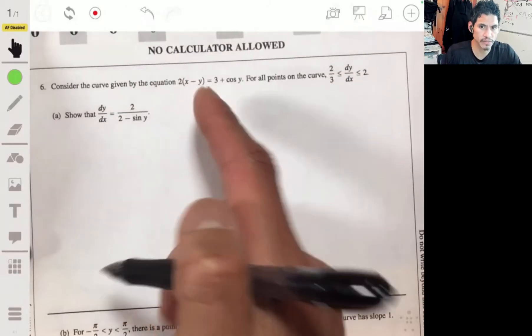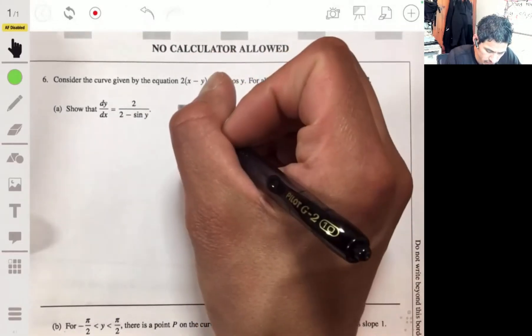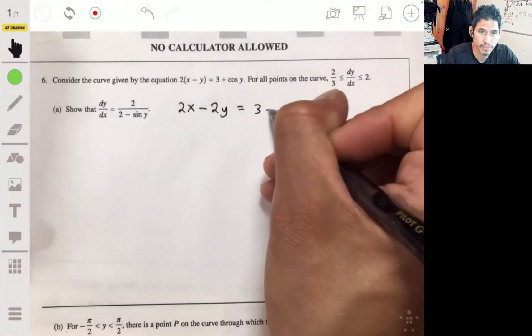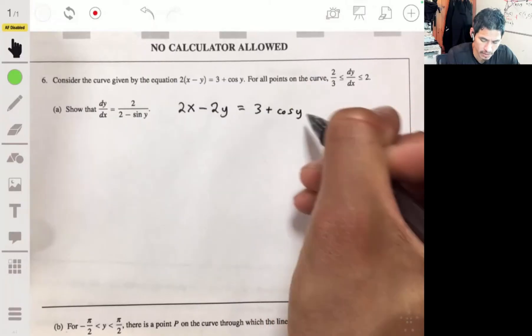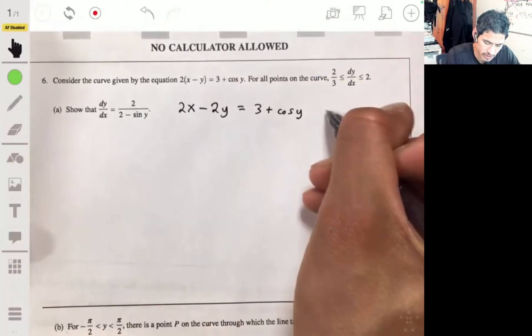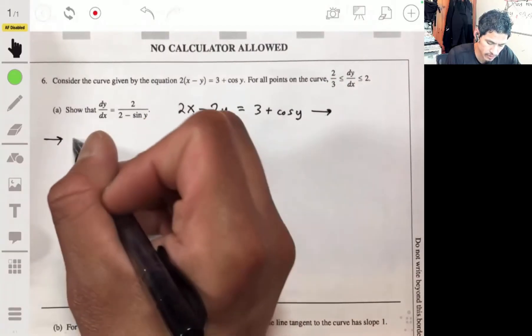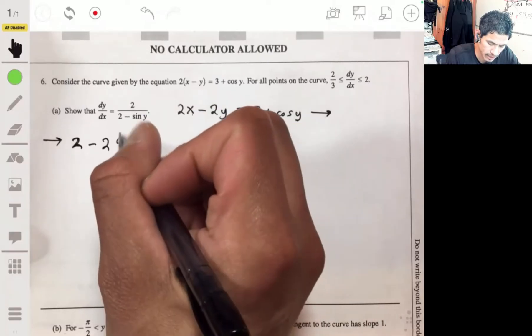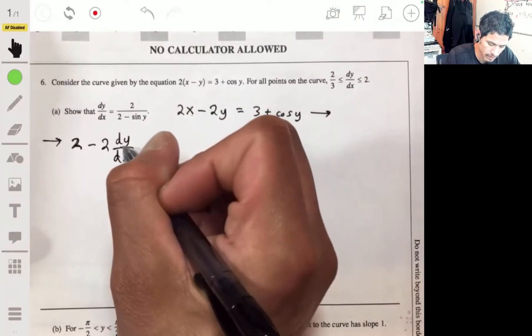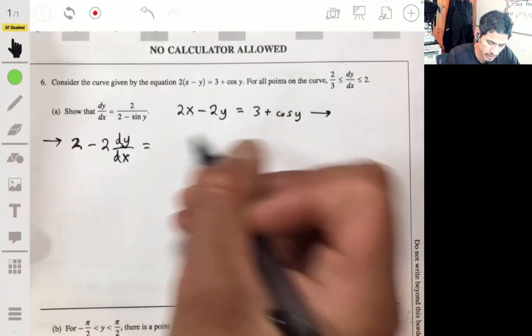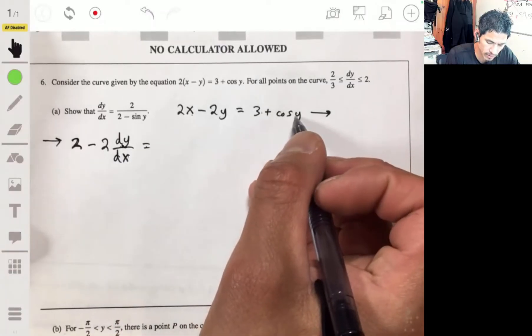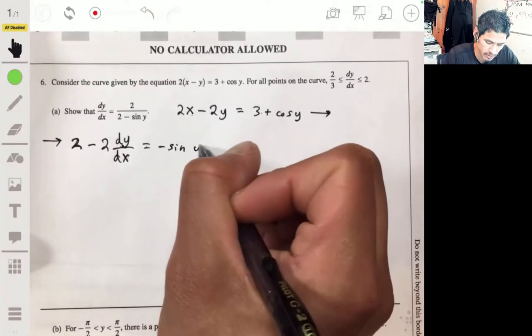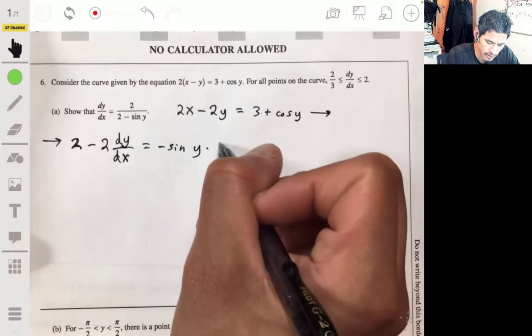Okay, so this is just going to involve implicit differentiation. Let's first rewrite this as two x minus two y equals three plus the cosine of y, and then differentiate this. We'll get two minus two times dy/dx, because we're doing implicit differentiation, equal to zero plus the derivative of the cosine of y, which would be the negative sine of y times dy/dx.